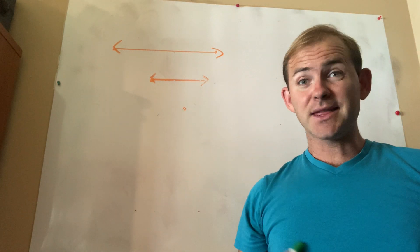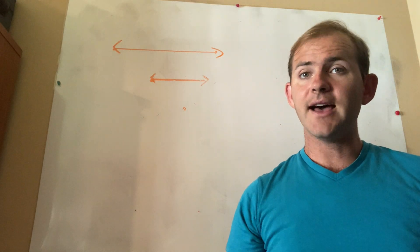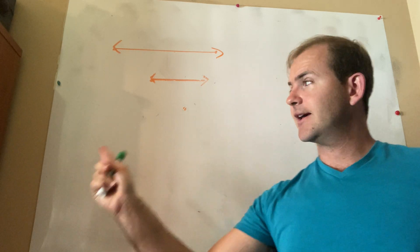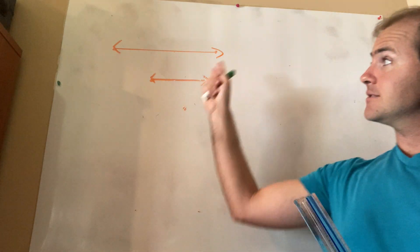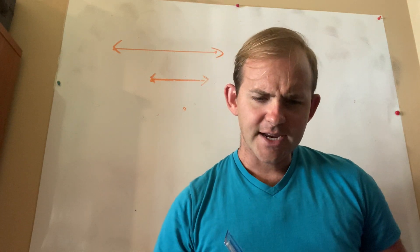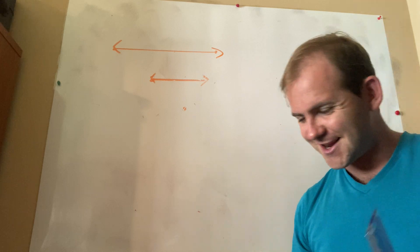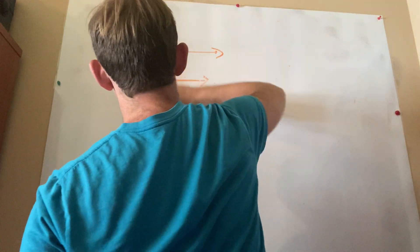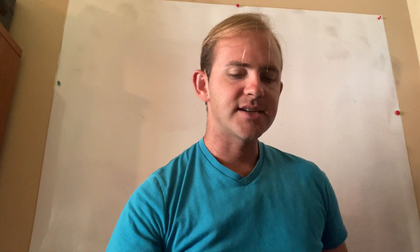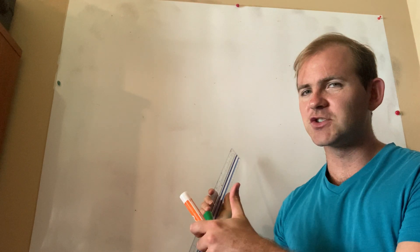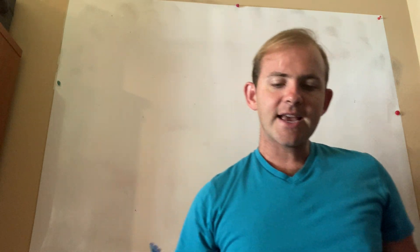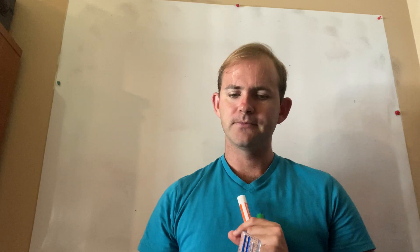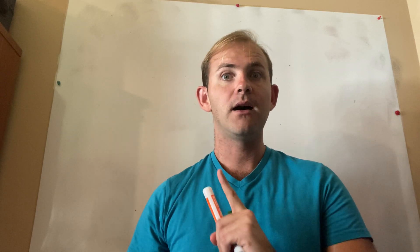Keep in mind: even though the new line looks longer, its length doesn't change because lines go on forever in both directions. The key takeaway is that when you dilate a line and the center of dilation is not on the line, the resulting line is parallel to the original. Now, when a line segment is dilated using a center of dilation not on the line, the resulting segment is parallel to the original and either longer or shorter depending on the scale factor used.